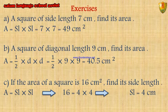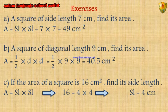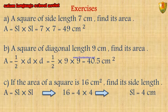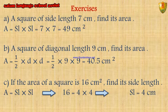Exercises. A square of side length 7 cm — find its area. Area equals side length times side length, equals 7 times 7, equals 49 cm².